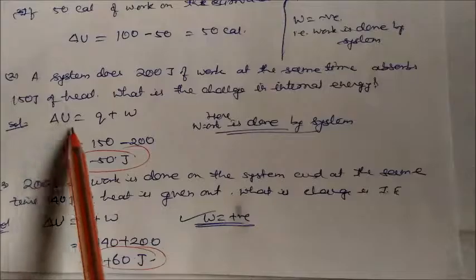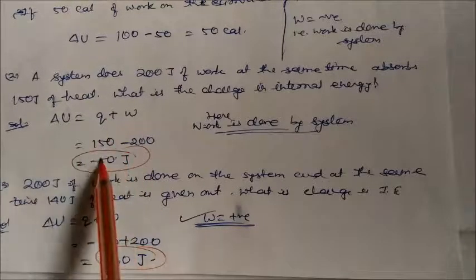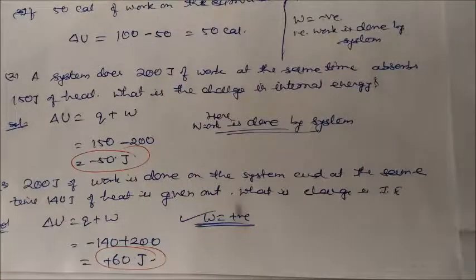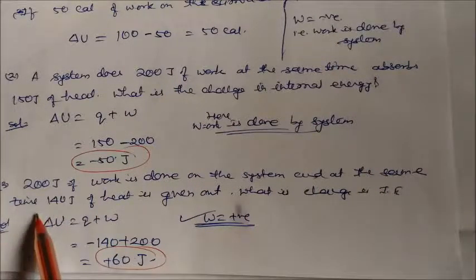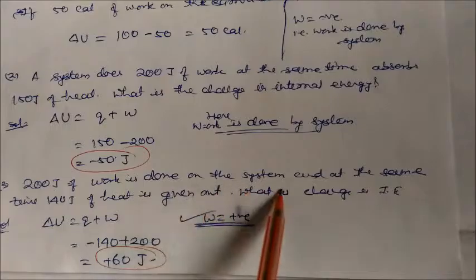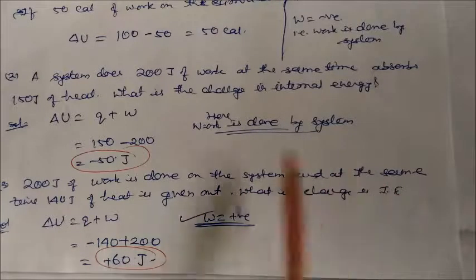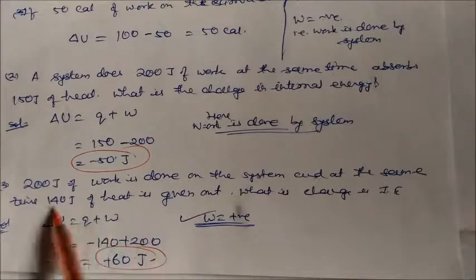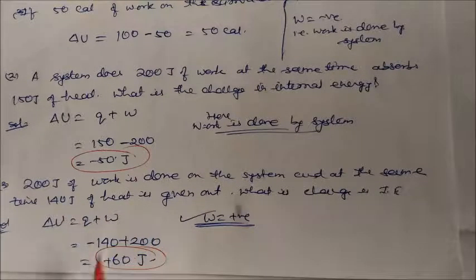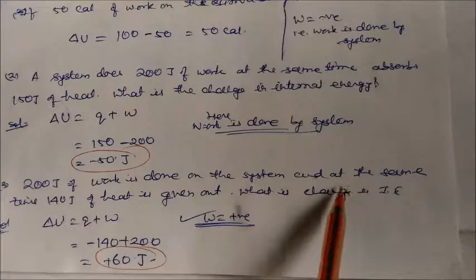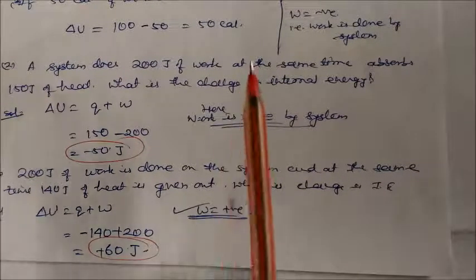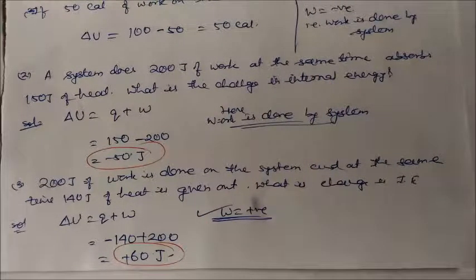Like internal energy, enthalpy is also a state function. Enthalpy change: ΔH = ΔU + pΔV, or in terms of expansion work, ΔH = ΔU + Δn_g RT, where Δn_g is the difference between the moles of gaseous products and gaseous reactants. In a cyclic process, ΔU = 0, so q = −w: heat absorbed equals work done by the system on the surroundings.